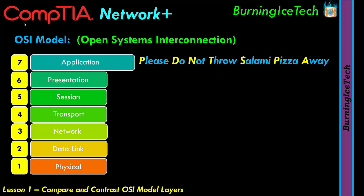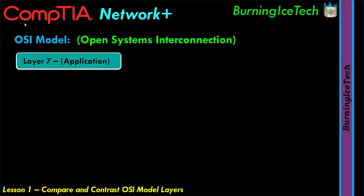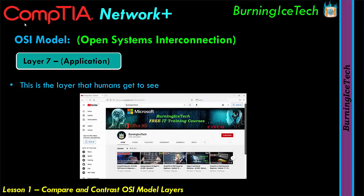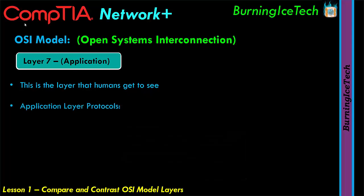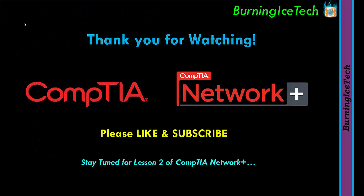Layer seven is the application layer — the layer we as humans can actually see. If you open a browser and load a web page, what you see is the application layer doing its thing. Application layer protocols include HTTP and HTTPS for browsing, FTP for file transfer, DNS for name resolution, and POP3 for email — all of these are application layer protocols.